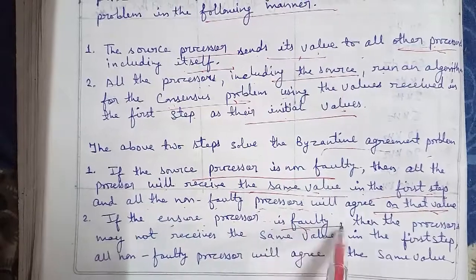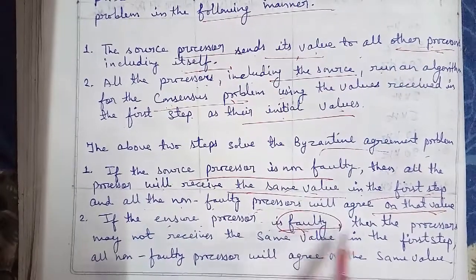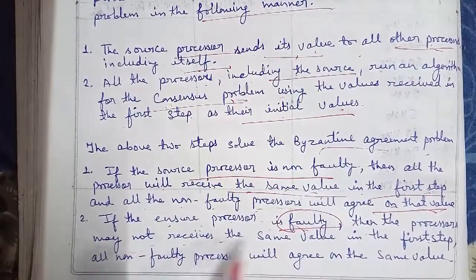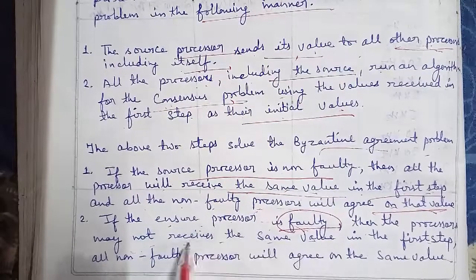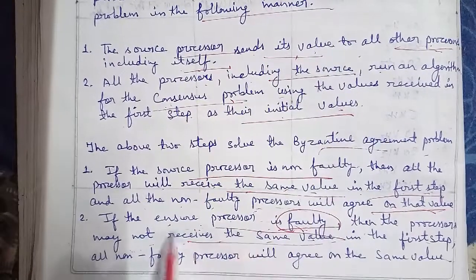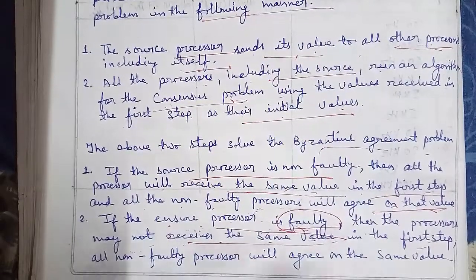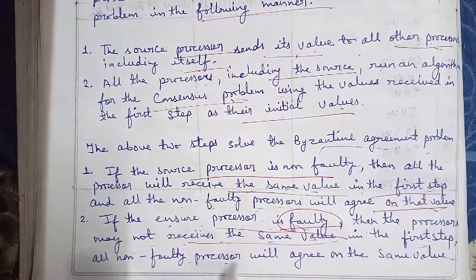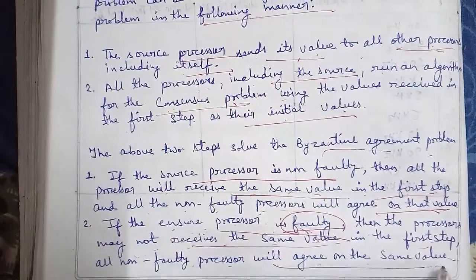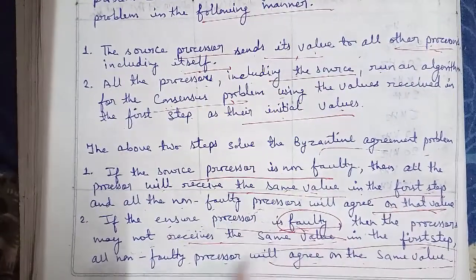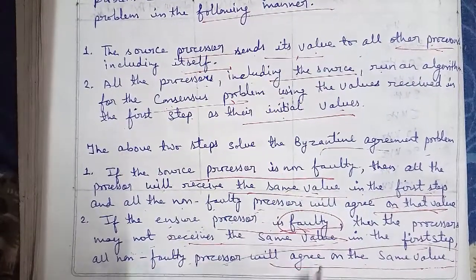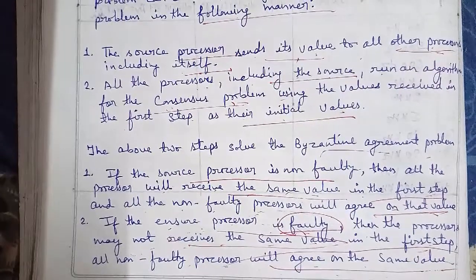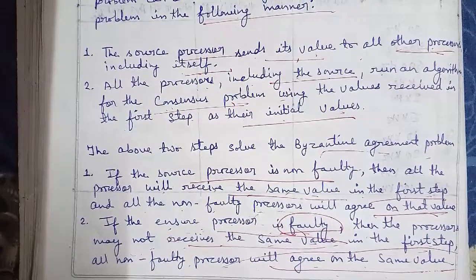Second, if the source processor is faulty, then the processors may not receive the same value in the first step. However, all the non-faulty processors will still agree on the same value among themselves.